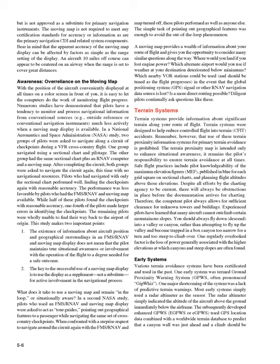Terrain systems provide information about significant terrain along your route of flight. Terrain systems were designed to help reduce controlled flight into terrain, CFIT, accidents. Remember, however, that use of these terrain proximity information systems for primary terrain avoidance is prohibited. The terrain proximity map is intended only to enhance situational awareness. It remains the pilot's responsibility to ensure terrain avoidance at all times. Safe flight practices include pilot knowledge of the maximum elevation figures, MEF, published in blue for each grid square on sectional charts, and planning flight altitudes above those elevations.